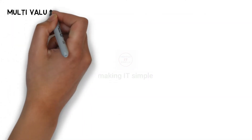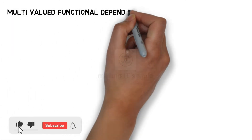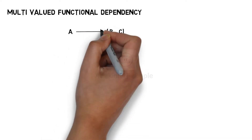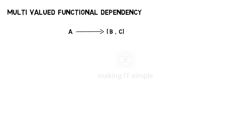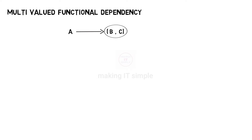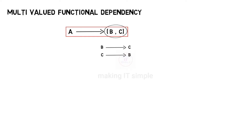Next we have Multi-Valued Functional Dependency. In this dependency we retrieve multiple values. Consider a Functional Dependency A determines B and C. This is a Multi-Valued Functional Dependency if there is no Functional Dependency between the dependents B and C — that is, there should be no dependency B determines C or C determines B. Only then can we say A determines B and C is a Multi-Valued Functional Dependency.